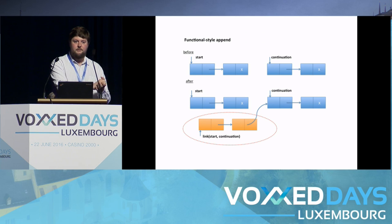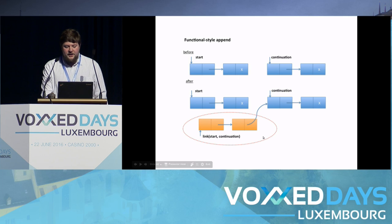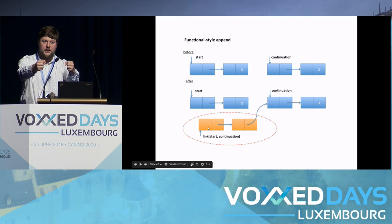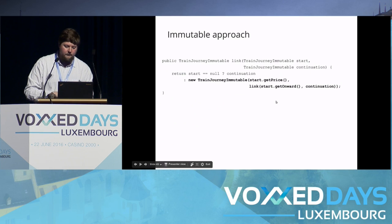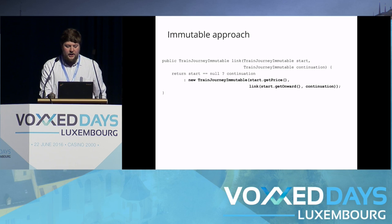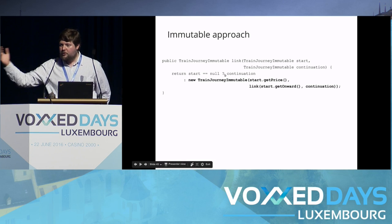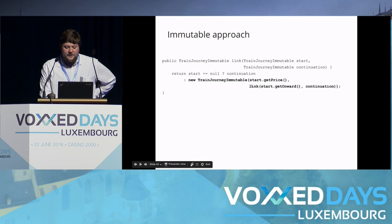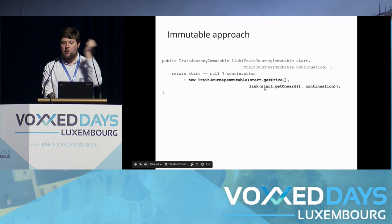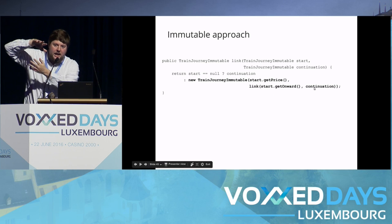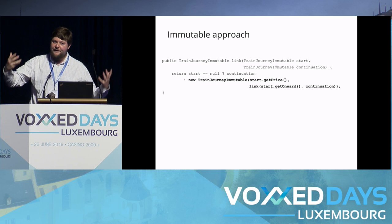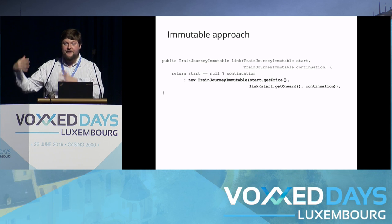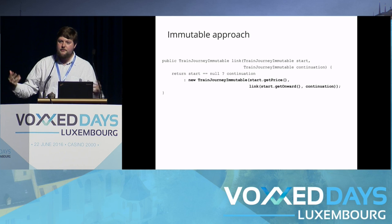With a more functional style using the immutable approach, our link function takes the start and continuation journeys and creates a new journey. If start is null, we return the continuation. Otherwise we keep the start's price, return a new journey, and recursively link the onward component with the continuation. The great point about this is it completely solves our infinite loop problem — the bug that happened earlier is physically not possible with this immutable approach simply due to the immutability.